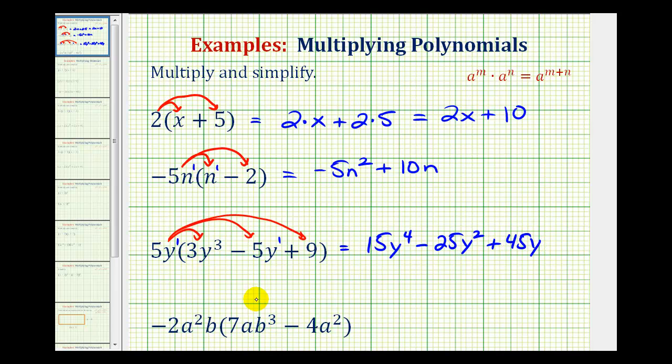In the last example, we'll distribute -2a²b. If it's helpful, we can think of this as b to the first, and this is a to the first. So -2a²b times 7ab³, we would have -14a³b⁴.